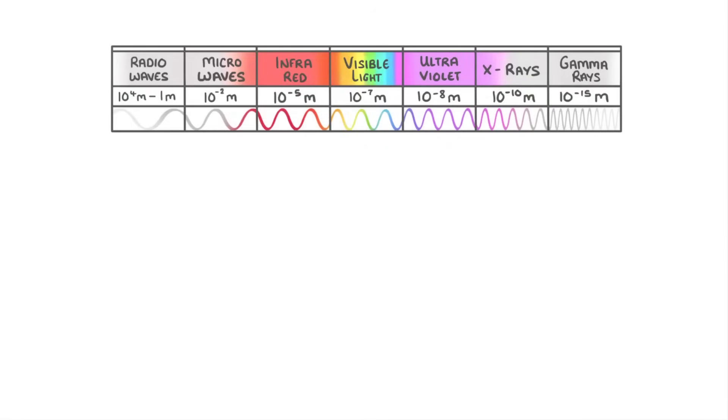In this video, we're going to look at the uses of visible and ultraviolet light. Visible light is the light that we use to see and appears different colours depending on the wavelength, with red being the longest wavelength and violet being the shortest.